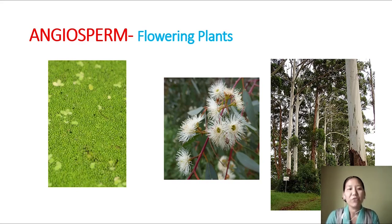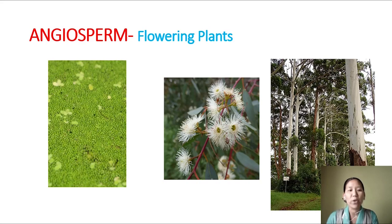Now look at the last division of plant kingdom - angiosperms. Angiosperms includes a group of plants which flower. These are the flowering plants and the flower can be large and showy or it can be dull. This group includes plants of various size and structure, and the size varies from the smallest Wolffia to the tallest Eucalyptus.